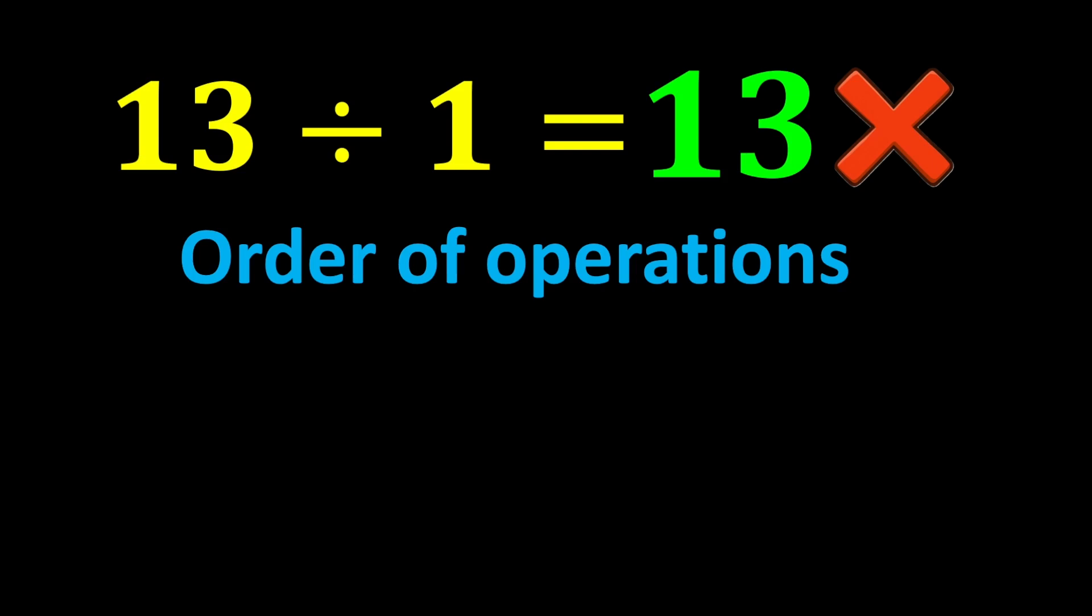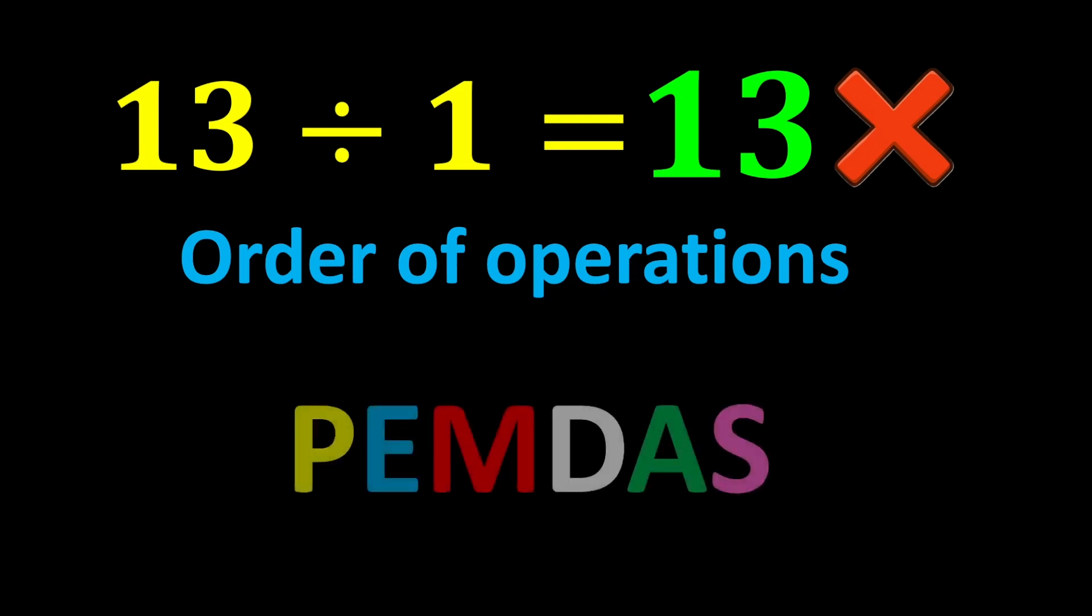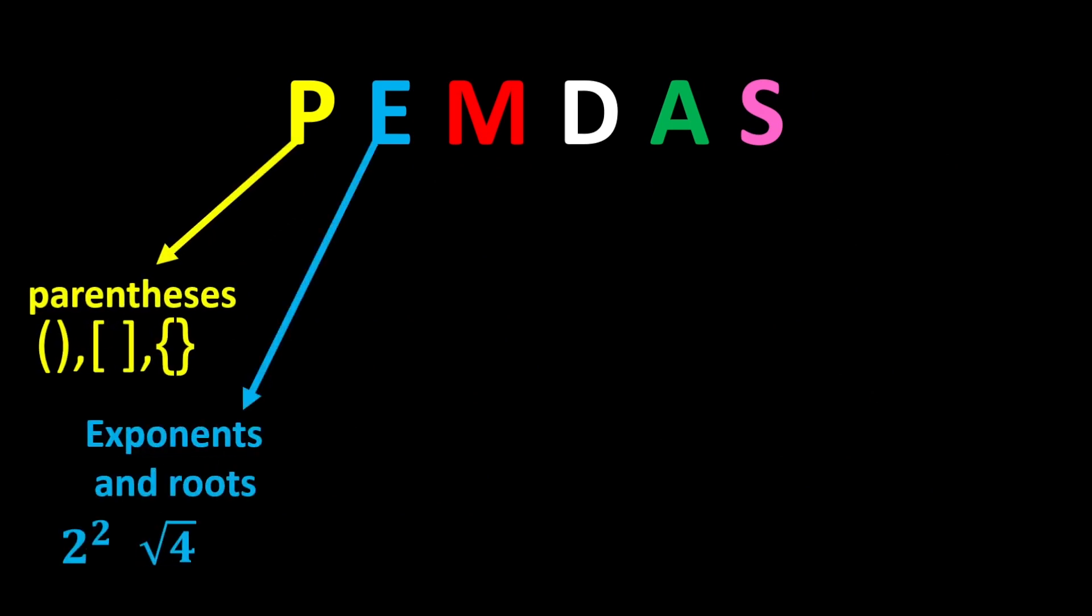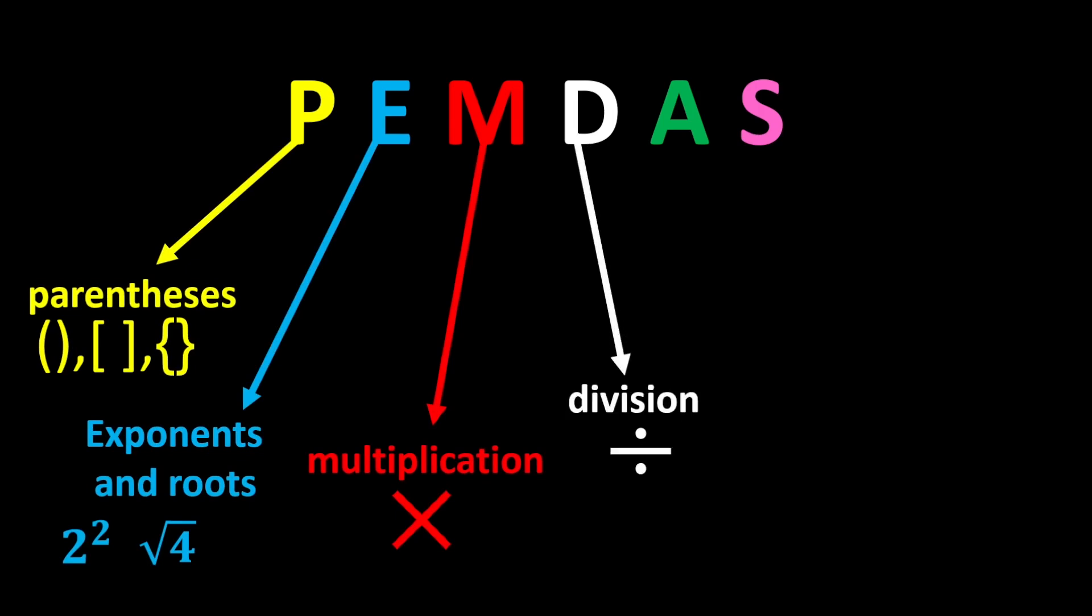The correct order of operations is known by a short acronym called PEMDAS. P stands for parentheses, E stands for exponents and roots, M stands for multiplication, D stands for division, A stands for addition, and S stands for subtraction.